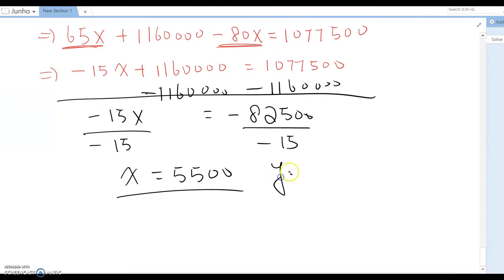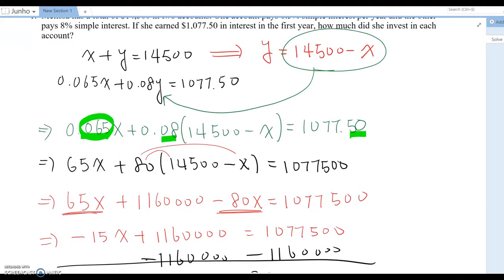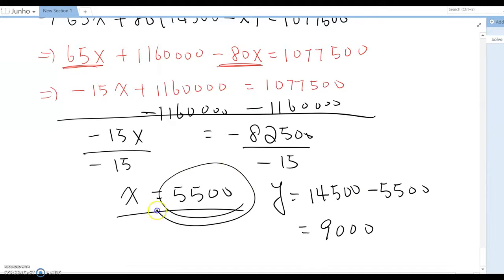Then Y means we define that 14,500 minus X. So 14,500 minus 5,500. Then total becomes 9,000. So this case, Melissa invested $5,500 for 6.5% account and $9,000 for 8% account.